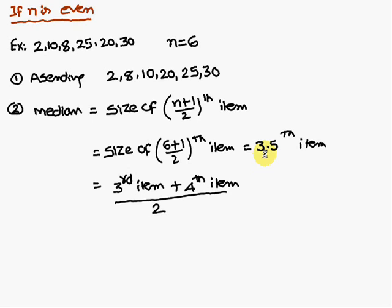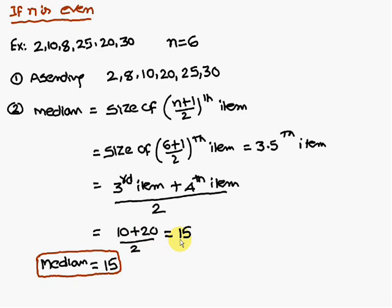3.5 means how we look at? Third item plus fourth item by 2. So third item. What is the third item in the ascending order only? You have to look for the third and fourth items. Third item is 10 and the fourth item is 20. Therefore, 10 plus 20 by 2. That is nothing but 15.